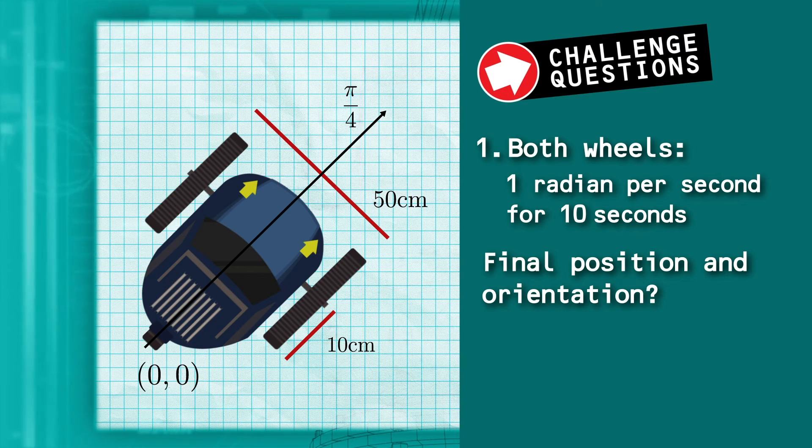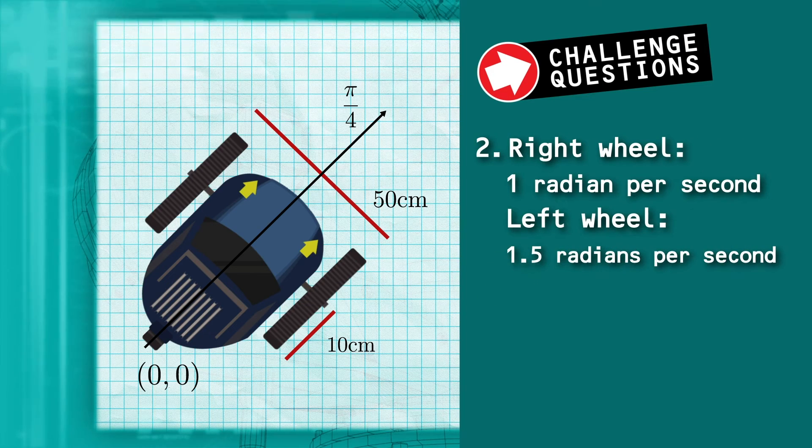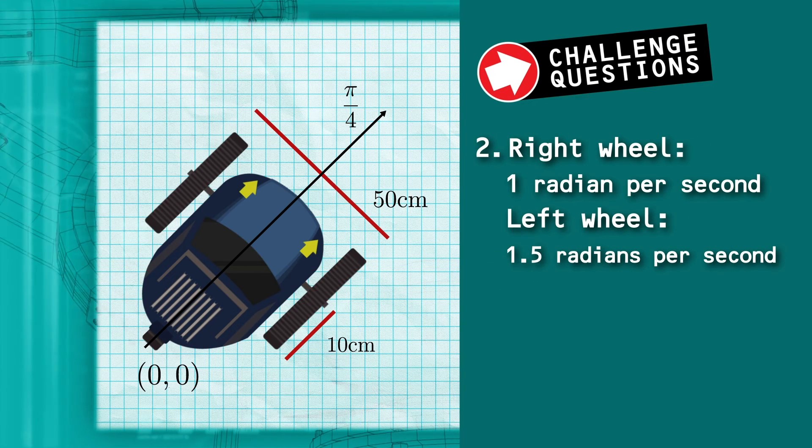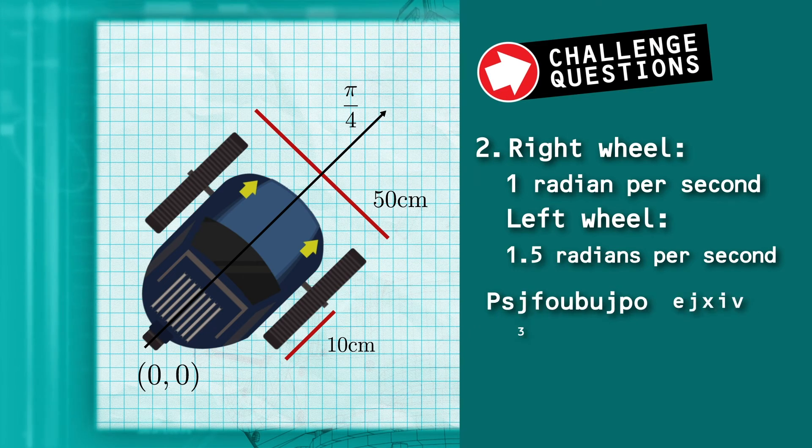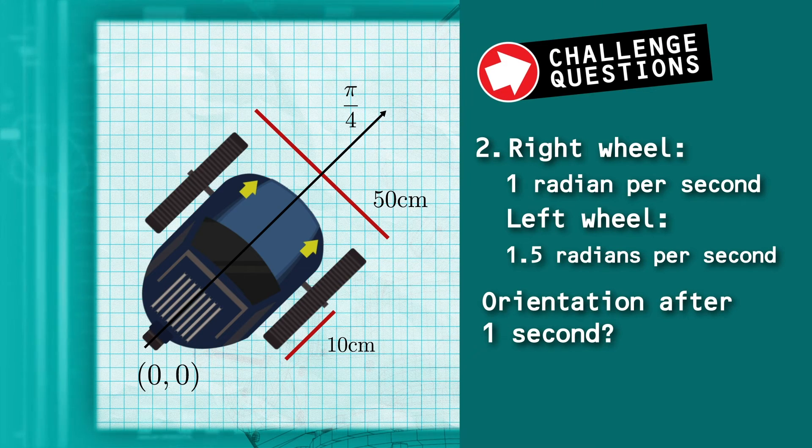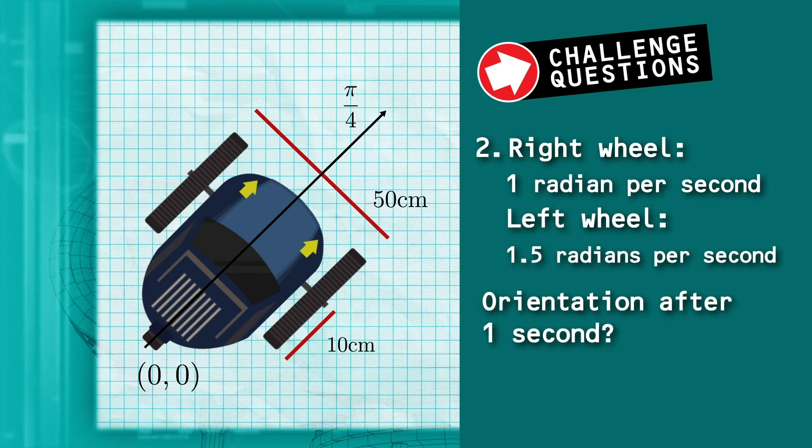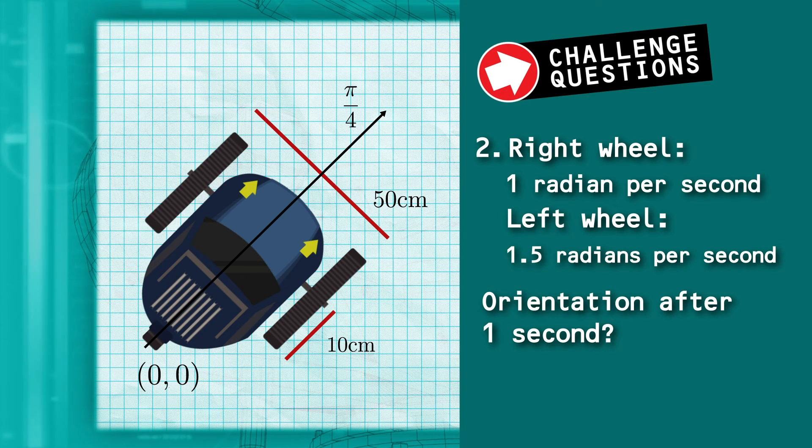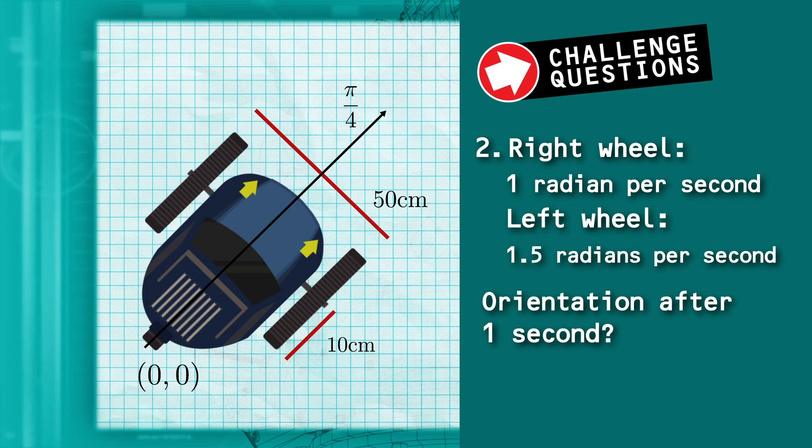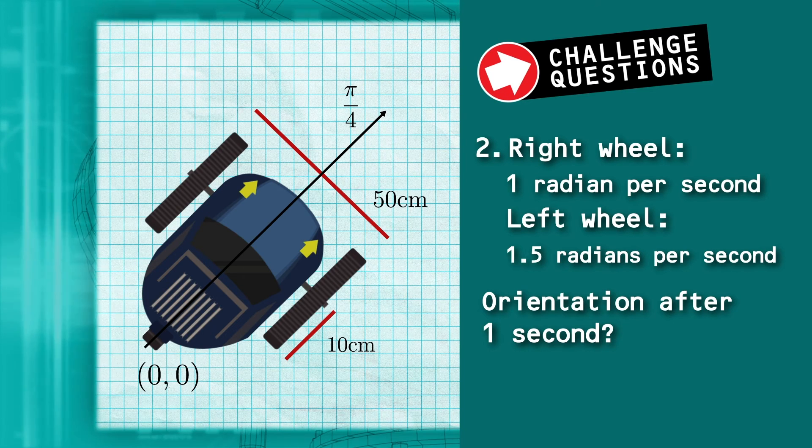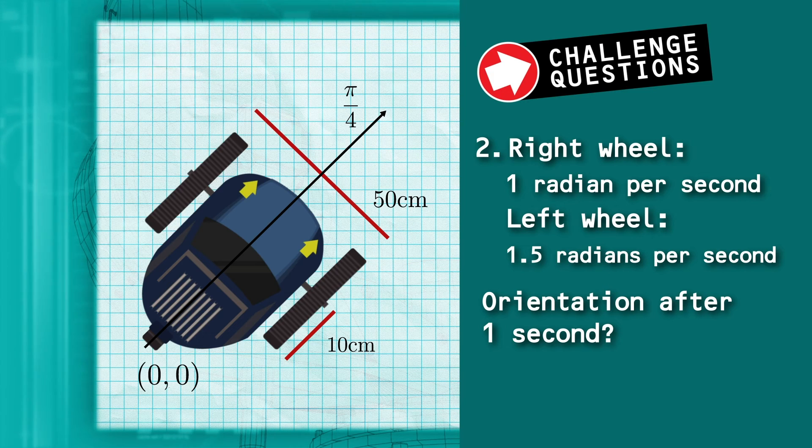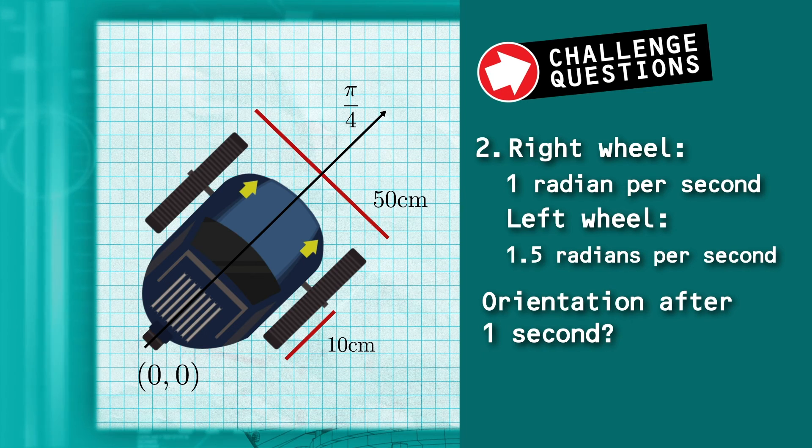Now, what if the robot runs the right wheel at 1 radian per second and the left wheel at 1.5 radians per second? What is the robot's final position and orientation after one second of motion?